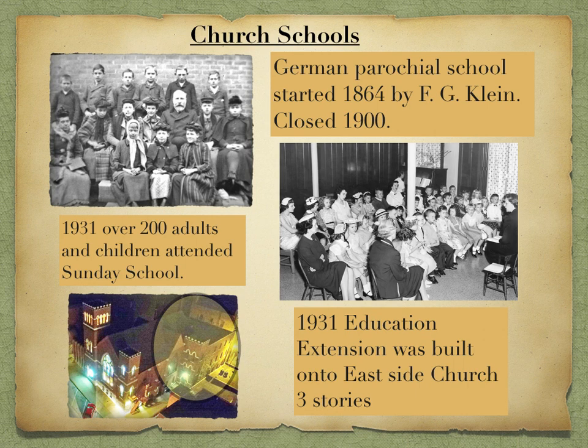Our church school was started in 1864 with F.G. Klein. He provided religious instruction carried through Sunday school and confirmation. Perfect attendance was rewarded with certificates and pins. If you were sick, you needed a signed excuse. If you visited another church, you needed a visitor's card or bulletin to count toward perfect attendance. Bible verses were printed on little tickets, and if the verses were learned, children were given prize tickets to buy special gifts. The evangelical catechism was memorized by everyone.